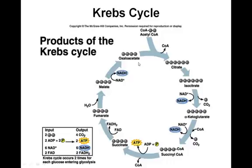The acetyl-CoA generated during the transition reaction enters into a series of different reactions as part of the Krebs cycle. What you're inputting is the acetyl-CoA along with ADP plus phosphates as precursors to make ATP. You also dump in uncharged electron carriers. What you get out importantly is the byproduct CO2, some additional ATP, and most importantly a large number of high-energy carrier molecules, NADH and FADH2.